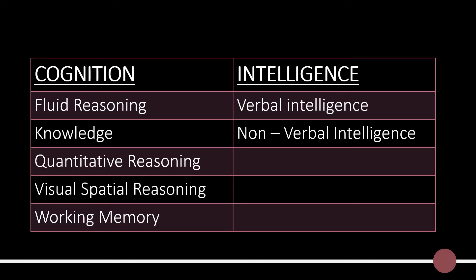The first aspect of cognition is fluid reasoning, which is related to abstract thinking. The next aspect is knowledge, which is related to the conceptual information that the individual has. Quantitative reasoning is related to mathematical skills. Visual-spatial reasoning is the understanding of visual forms and spatial layouts. Working memory is related to the recalling of new information. The two aspects of intelligence are verbal intelligence and non-verbal intelligence.